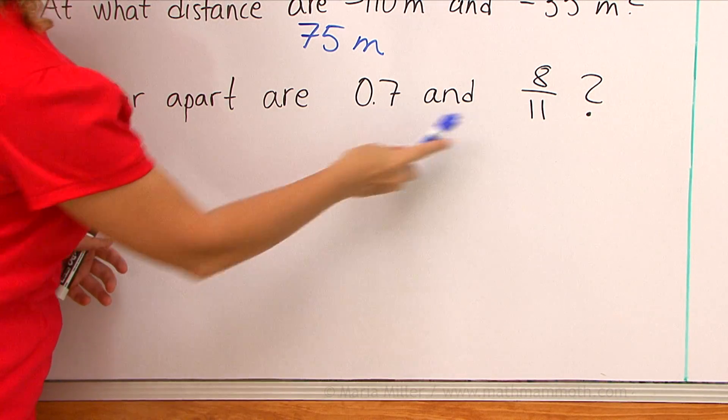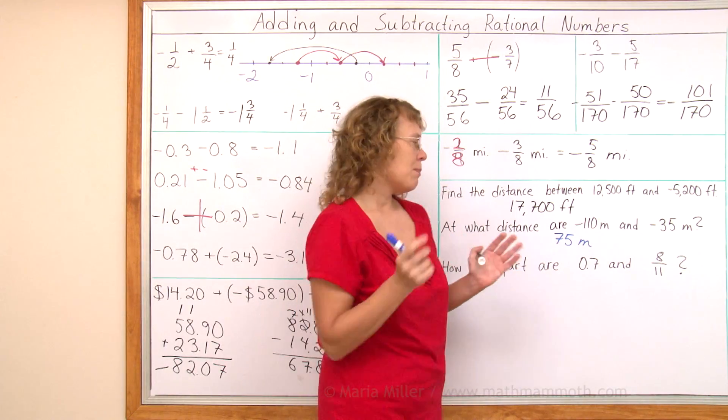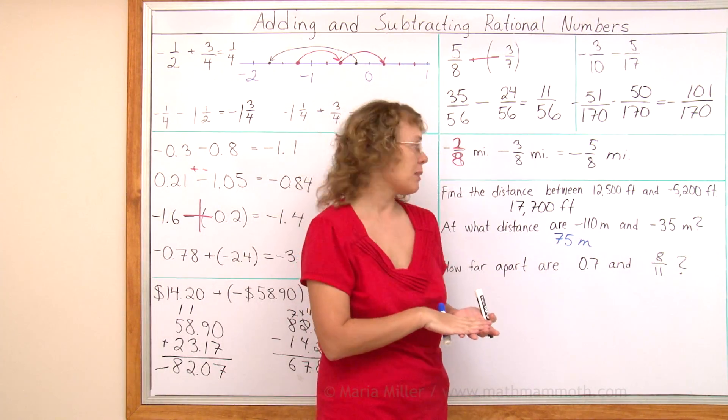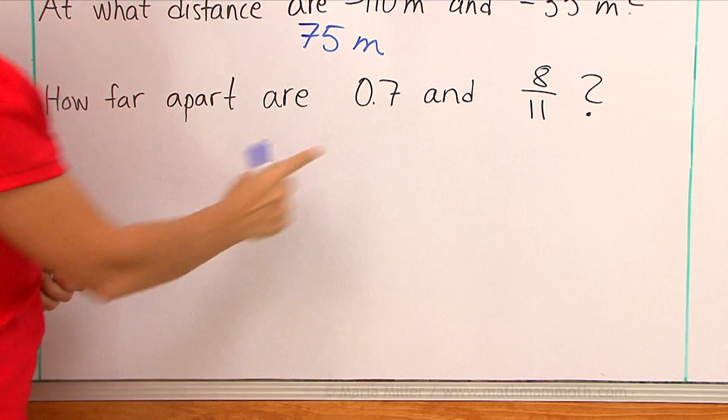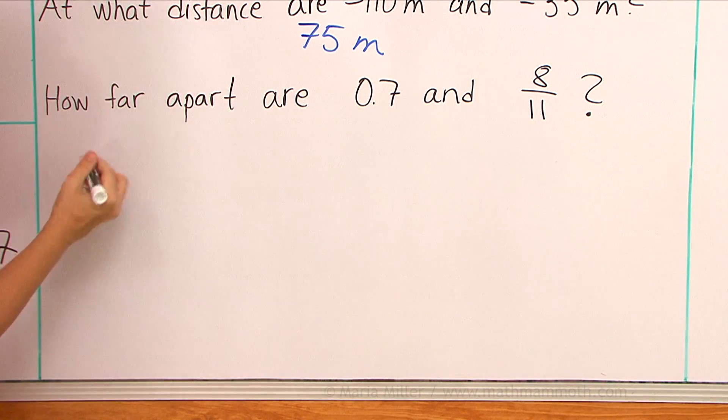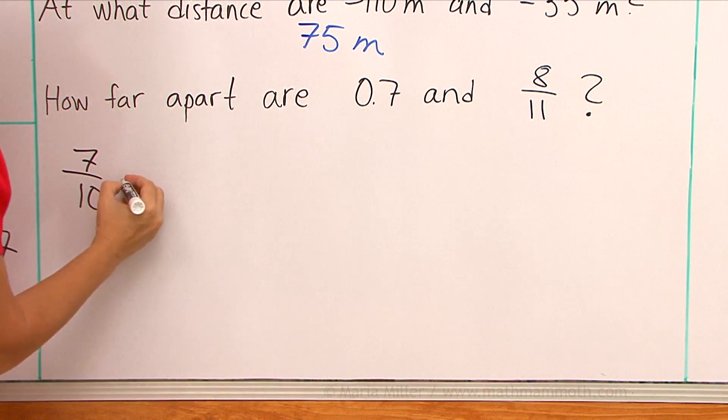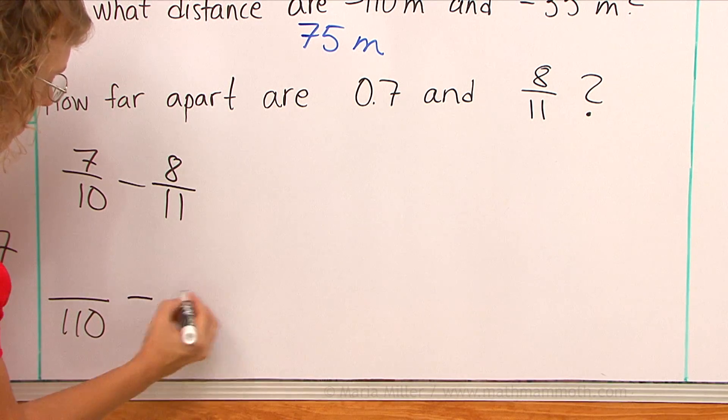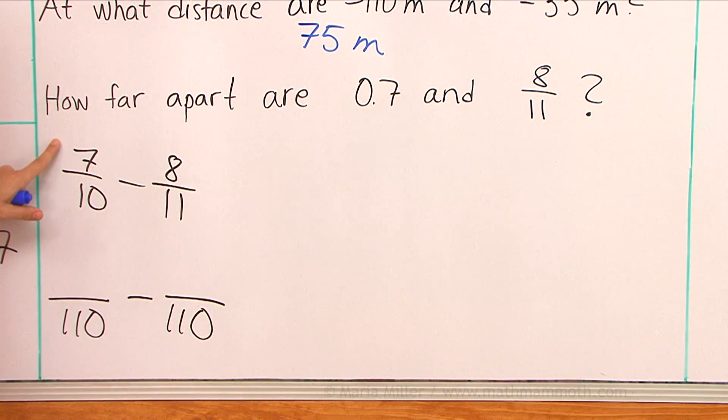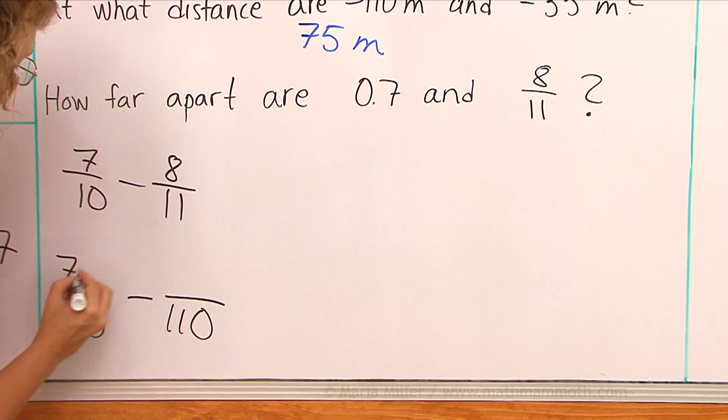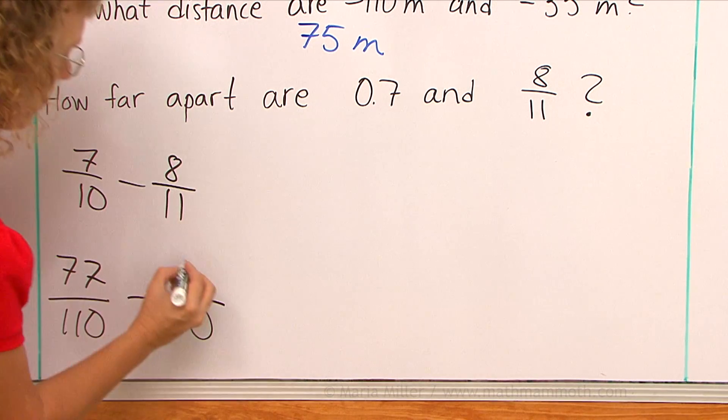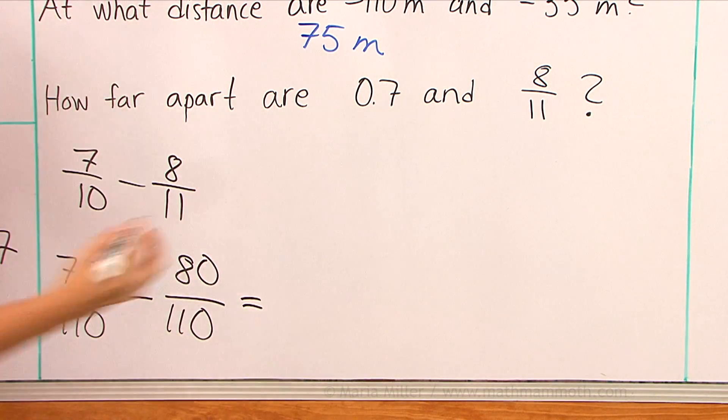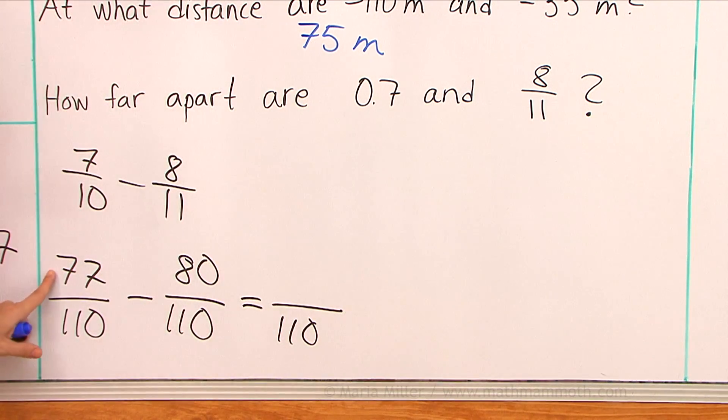To find the difference I subtract. This one is a decimal, that's a fraction, so there's a problem there. They both need to be either fractions or both decimals. This one is easy to write as a fraction, it's seven tenths. So let's take seven-tenths minus eight-elevenths. This is just a simple fraction subtraction. We need a common denominator and if I multiply those we get one-hundred ten. Then over here seven times eleven, and over here eight times ten. And subtract the top numbers, seventy-seven minus eighty.